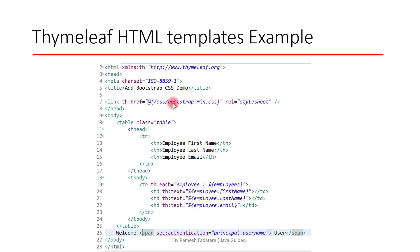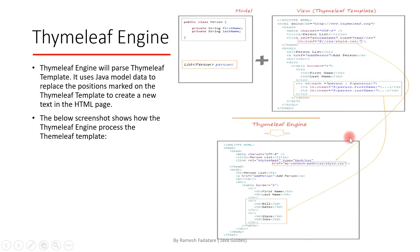We'll create lots of examples in this tutorial series to understand Thymeleaf concepts and expressions. Now let's look at how the Thymeleaf engine works. The Thymeleaf engine parses a Thymeleaf template and uses Java model data to replace the positions marked in the template to create new text in the HTML page. For example, if we have a Java Person class with first name and last name, and a list of Person objects we want to display, we use the th:each Thymeleaf attribute to iterate over that list in the template.